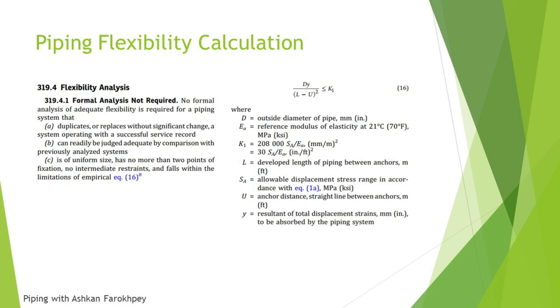In ASME B31.3, we have a flexibility analysis part. In this section, we have to calculate the displacement that is added to our piping system from the thermal movements. By calculating that value, you have to compare it to the allowable stress range or allowable displacement stress range that our material has. In this section, the code says that when you duplicate or replace a system without significant change from another system that has had successful operation, you don't need to calculate the flexibility analysis.